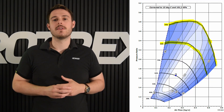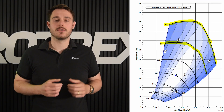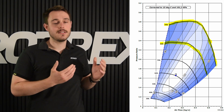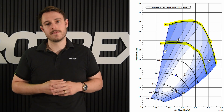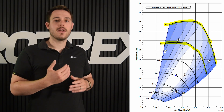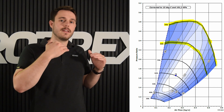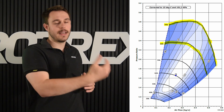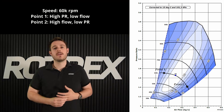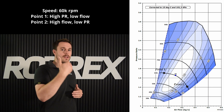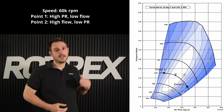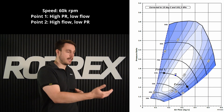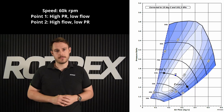The third element in our compressor maps is the constant speed lines, denoted here by 90k, 80k, and so on. The speed lines tell you basically the ratio between the pressure ratio and the airflow — so you can either move not very much air and get a lot of pressure ratio, or you can move a lot of air and not get very much pressure ratio.